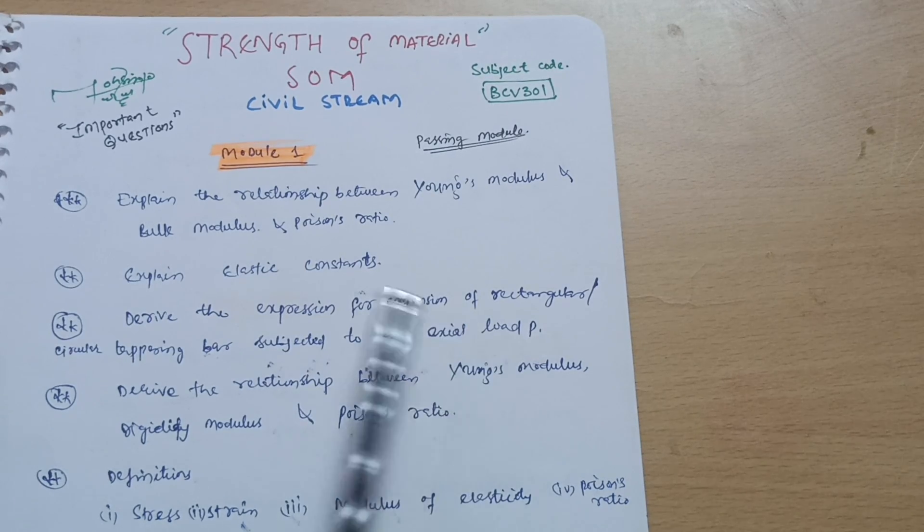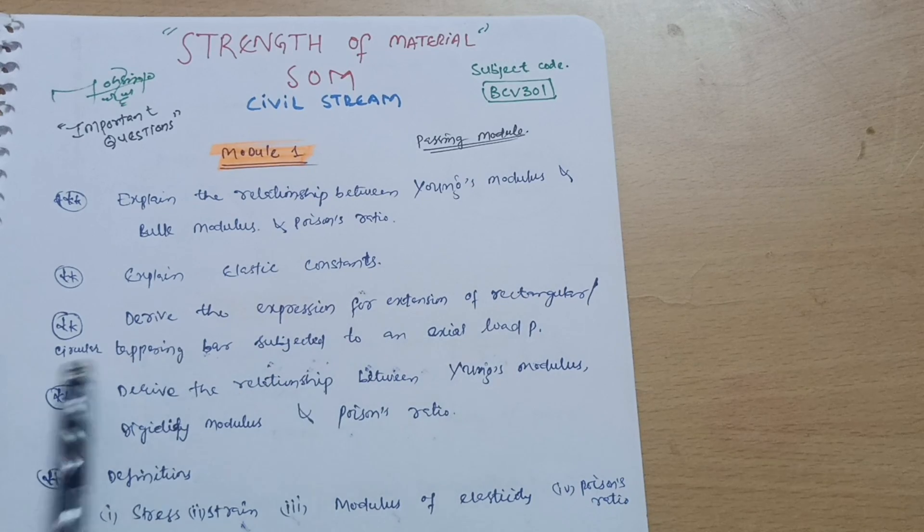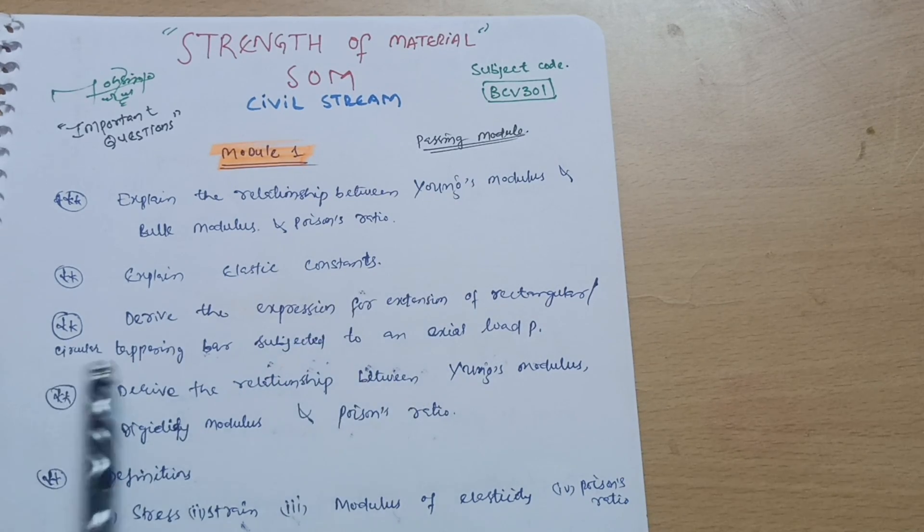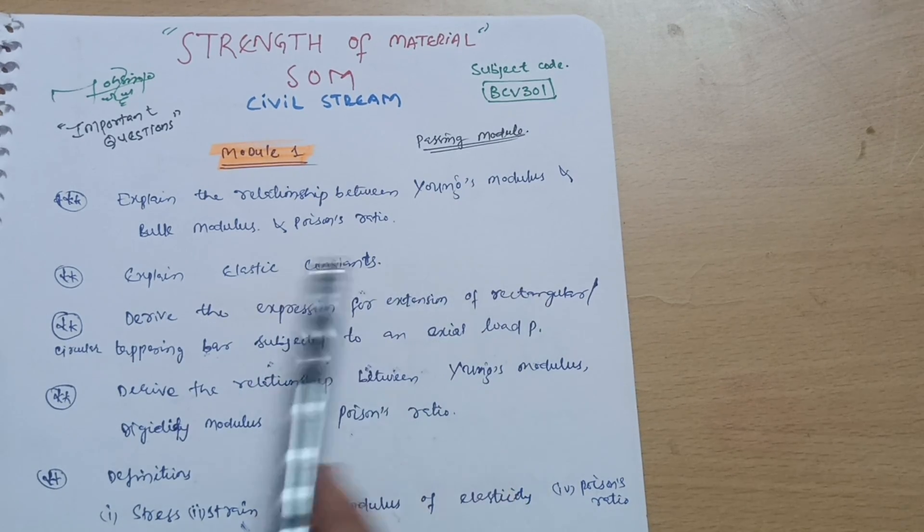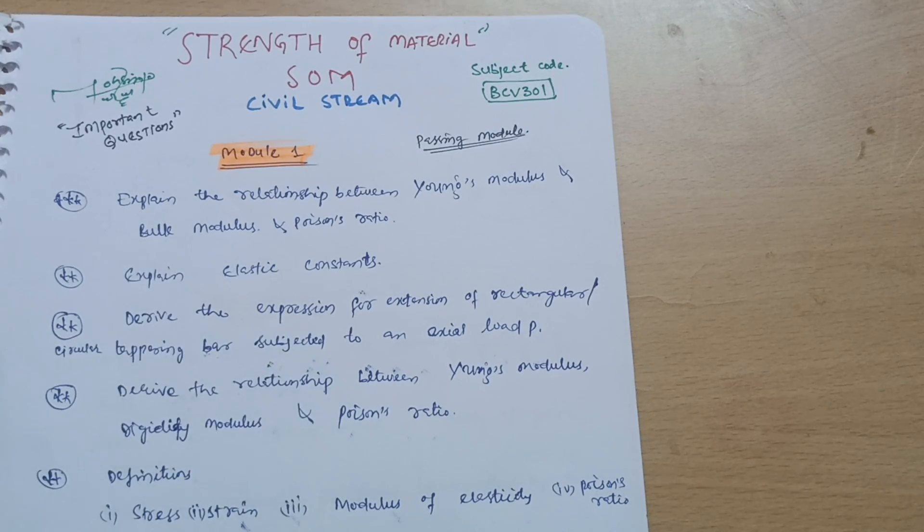Sometimes they will ask derive the expression for extension of circular tapering bar. These are the two types: rectangular tapering bar and circular tapering bar. These are the two questions which I combined, otherwise this is a separate question.